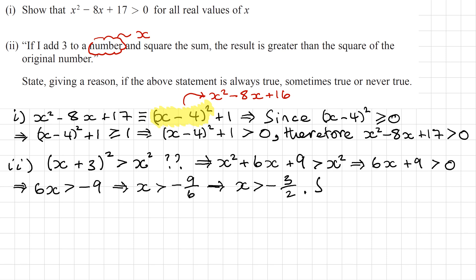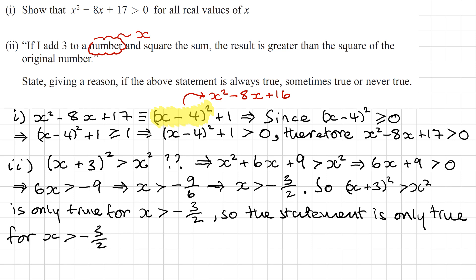Always write down what you're thinking. So x plus 3 all squared, greater than x squared, is only true for x greater than negative 3 over 2. So that means that this statement here is only true for x is greater than negative 3 over 2. So the statement is only sometimes true for x, not for all and not for none.